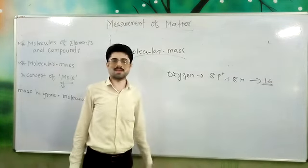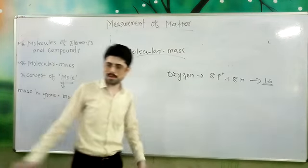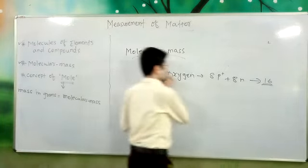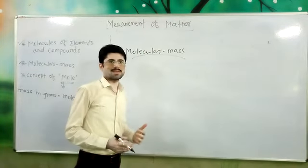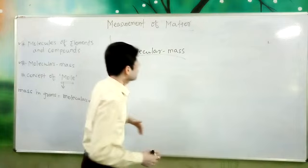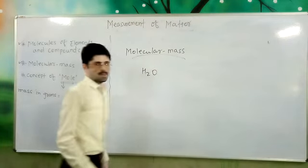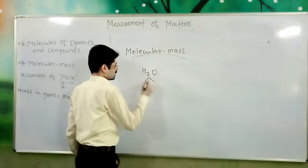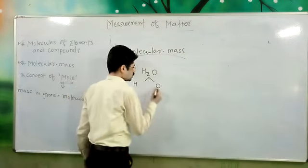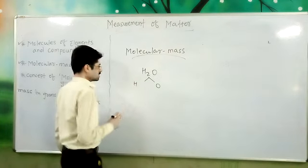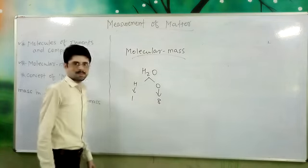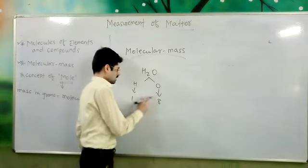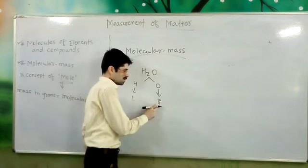If you look at the atomic mass of elements, we can find the molecular mass from those atomic masses. For example, in H2O we have 2 hydrogen atoms and 1 oxygen atom. The atomic mass of hydrogen is 1, and the atomic mass of oxygen is 16.